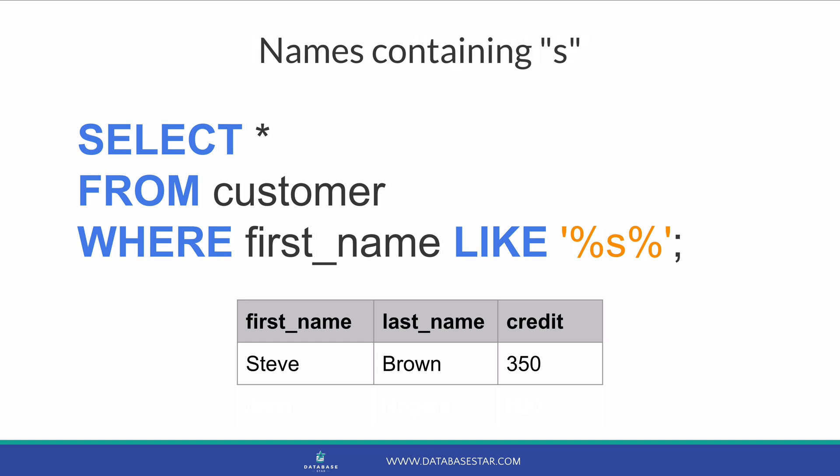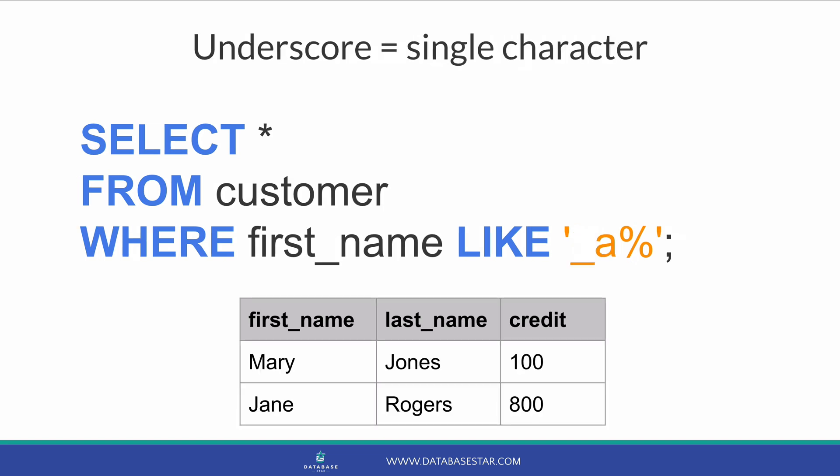This will show the following results. An alternative to the percent character is the underscore character. This represents a single character. For example, to find any name that has an A as the second letter, we say _A%. This means only one character can come before the A.